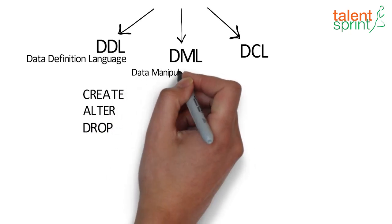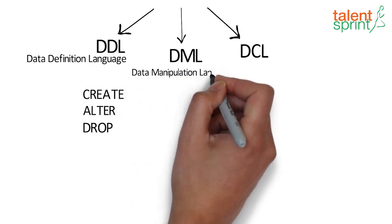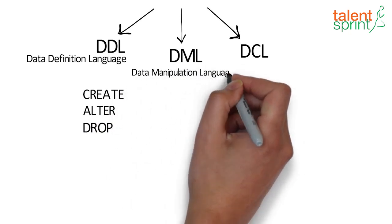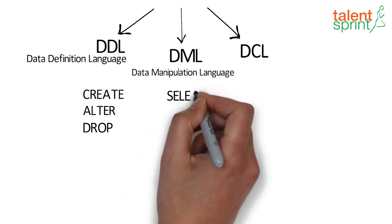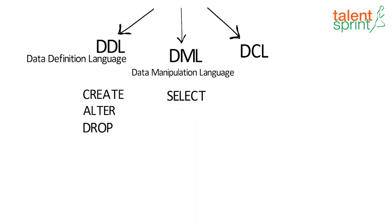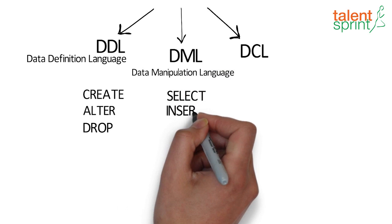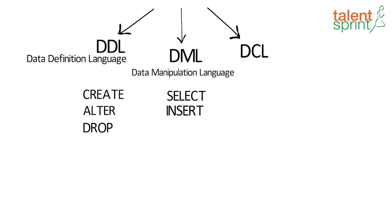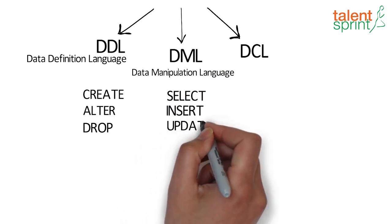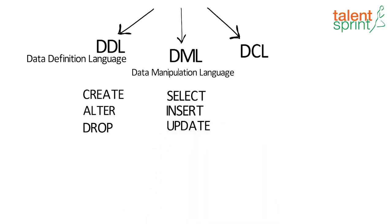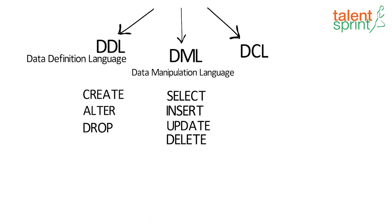DML is the Data Manipulation Language. Its commands include SELECT, which retrieves records from a table; INSERT, which creates a record in the table; UPDATE, which modifies a record; and DELETE, which deletes a single record.